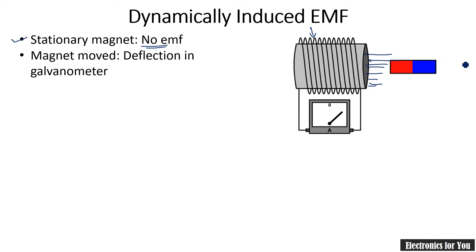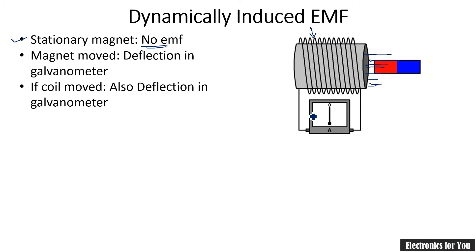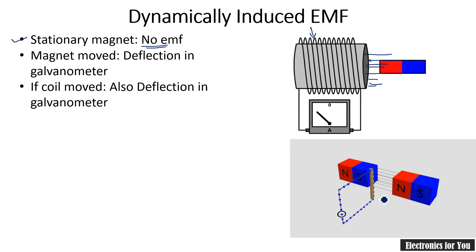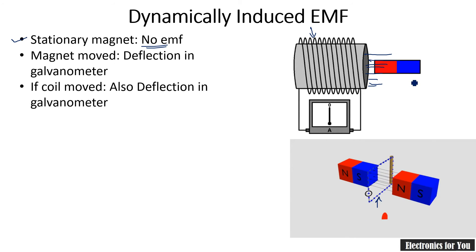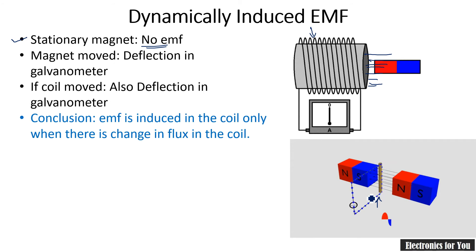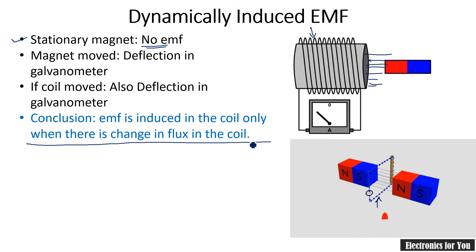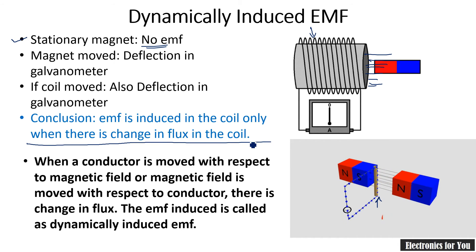If the magnet is stationary, no EMF is generated. If there is movement of the magnet, there is deflection in the galvanometer indicating flow of current. Similarly, if the coil is moved while keeping the magnet stationary, the EMF is also induced. We can conclude that EMF is induced only when there is a change in magnetic flux in the coil.